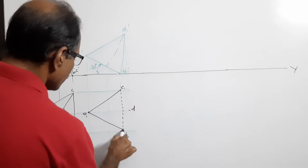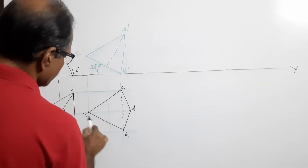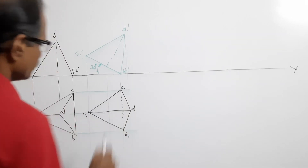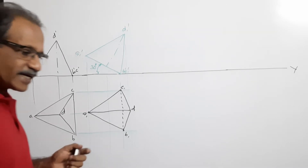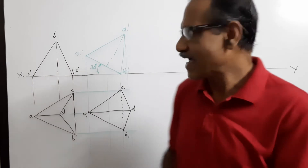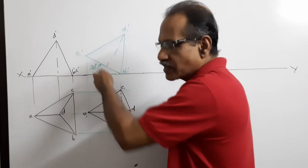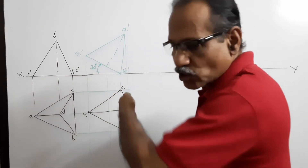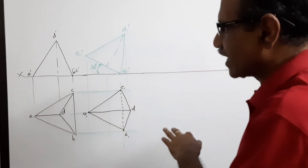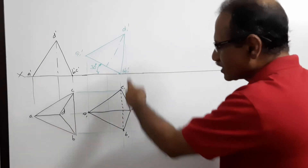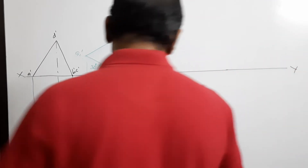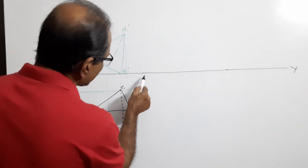Make the visible edges firm. Now the tetrahedron is standing on an edge with the triangular face containing that edge making 30 degrees to HP, and the edge on which it is resting is perpendicular to VP. You now have to redraw this plan such that B1C1 makes 45 degrees to VP. Therefore I draw a 45-degree line.